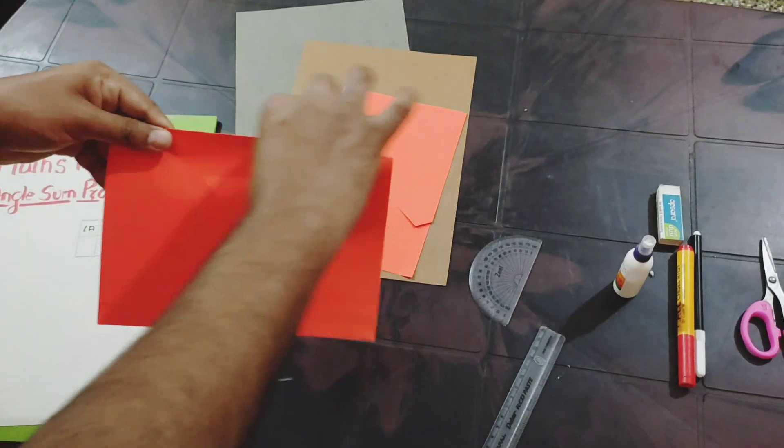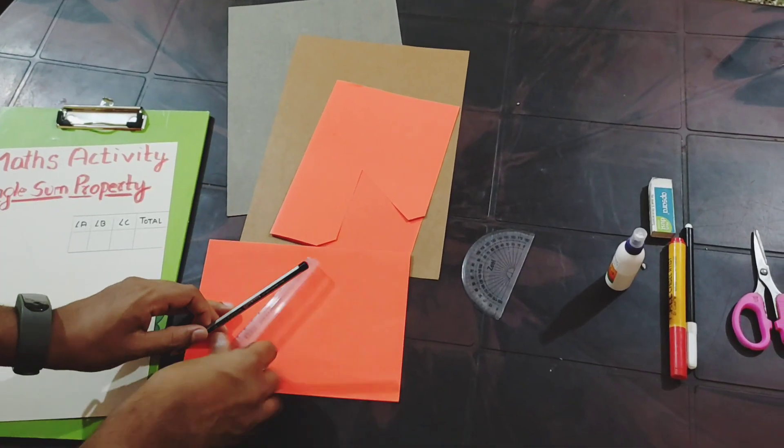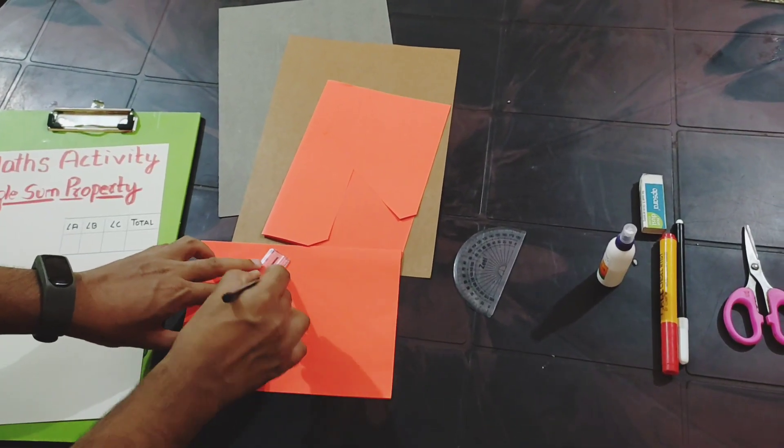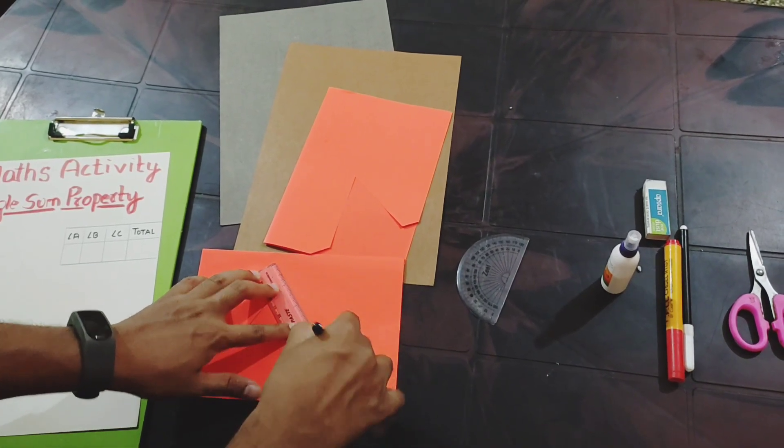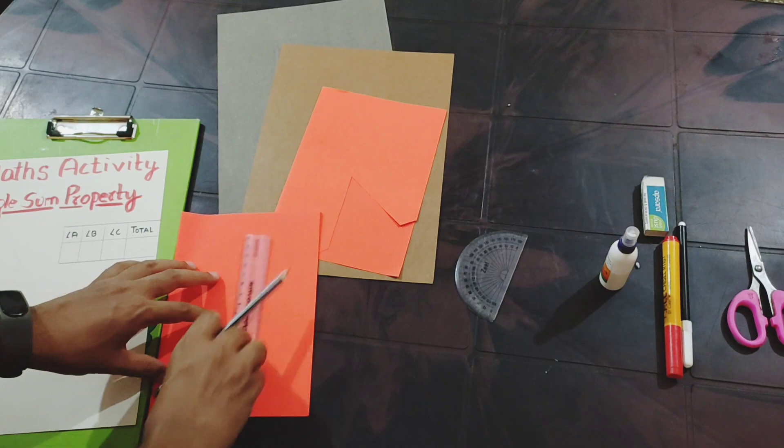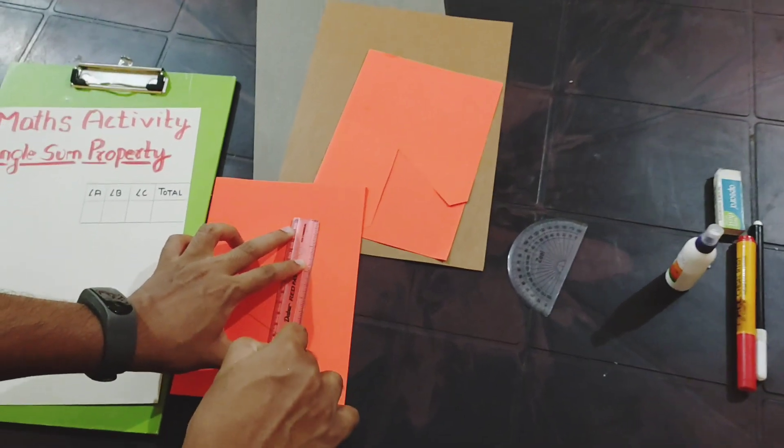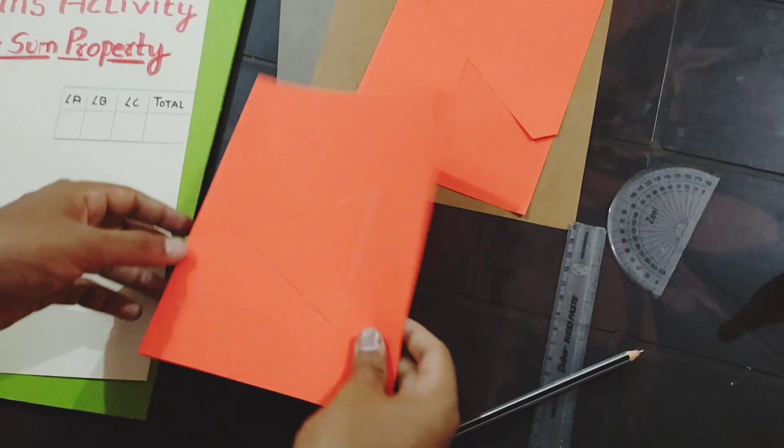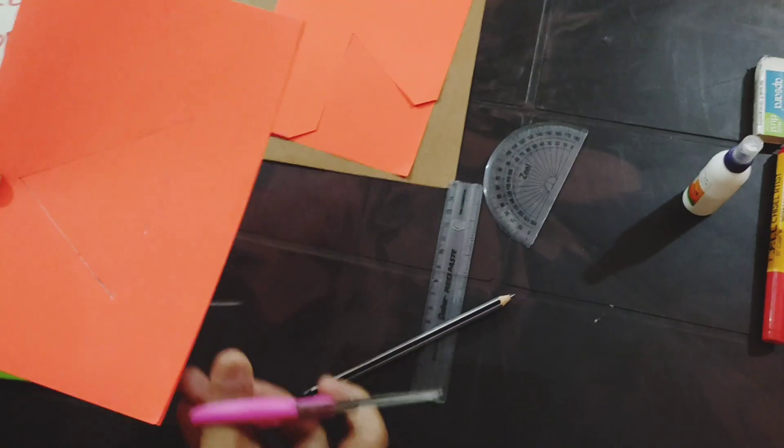Now let's quickly start the activity. Take a color paper and fold it into equal halves. Then draw a triangle of any length you want - a shape with three sides.